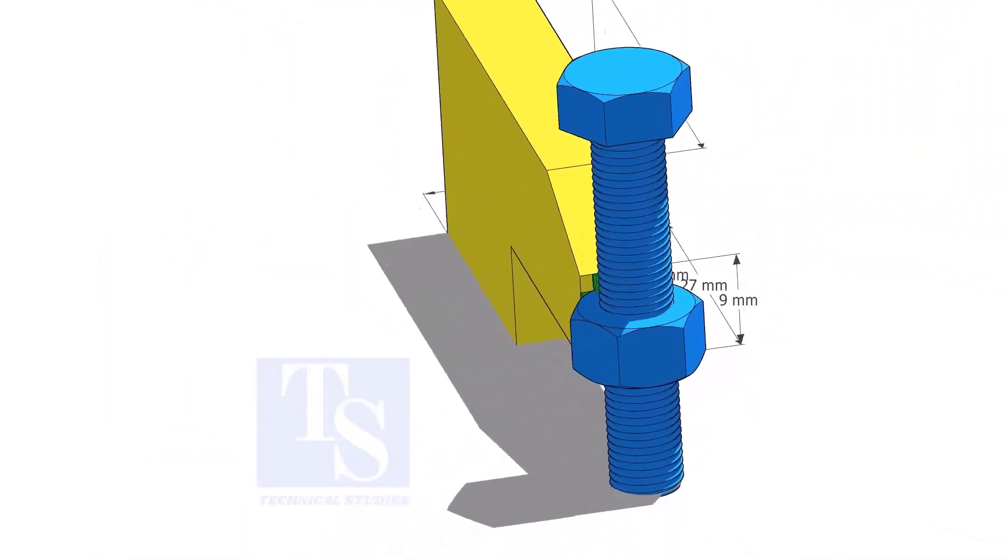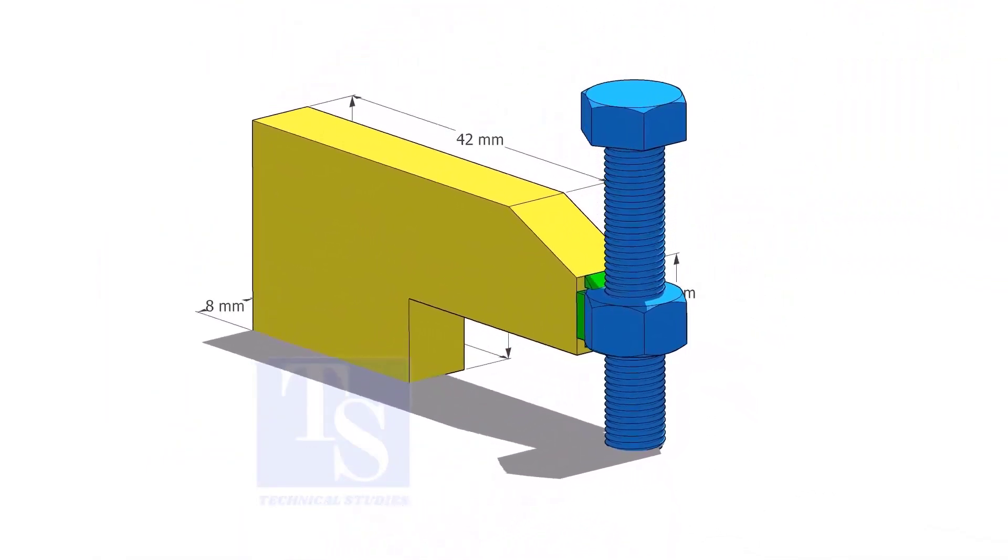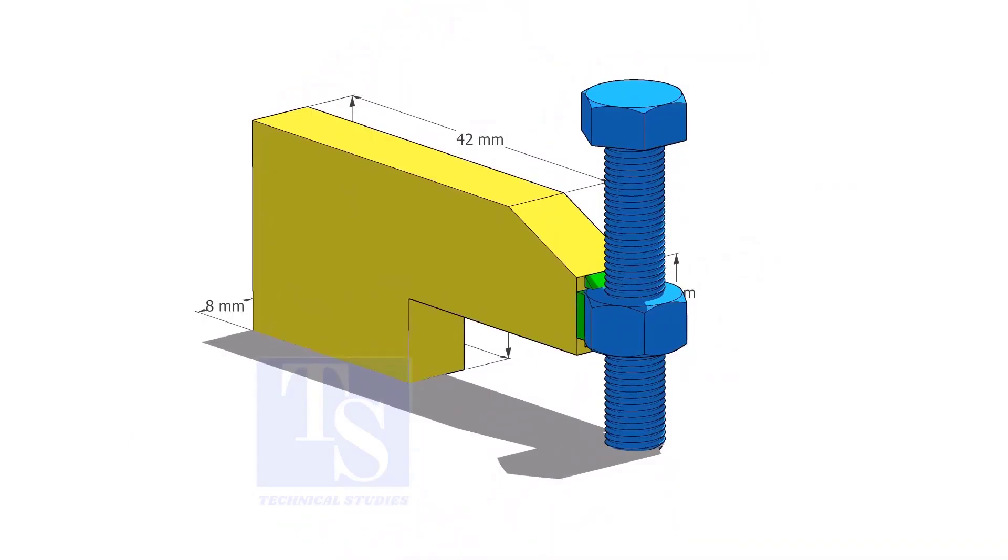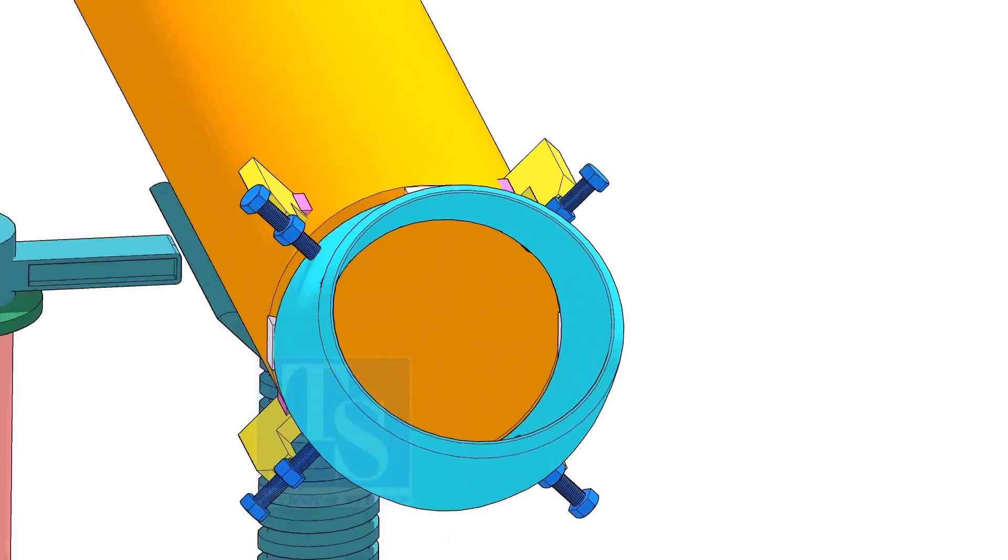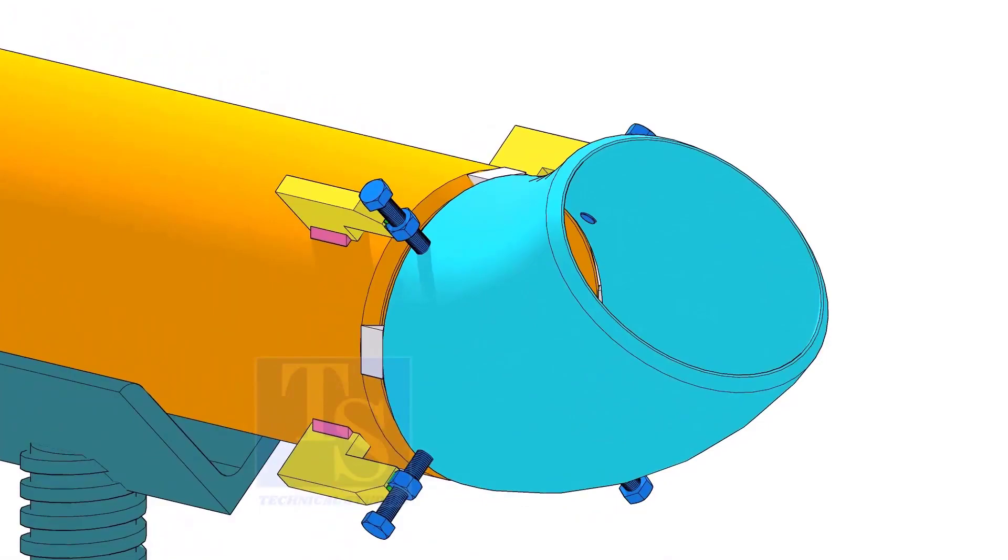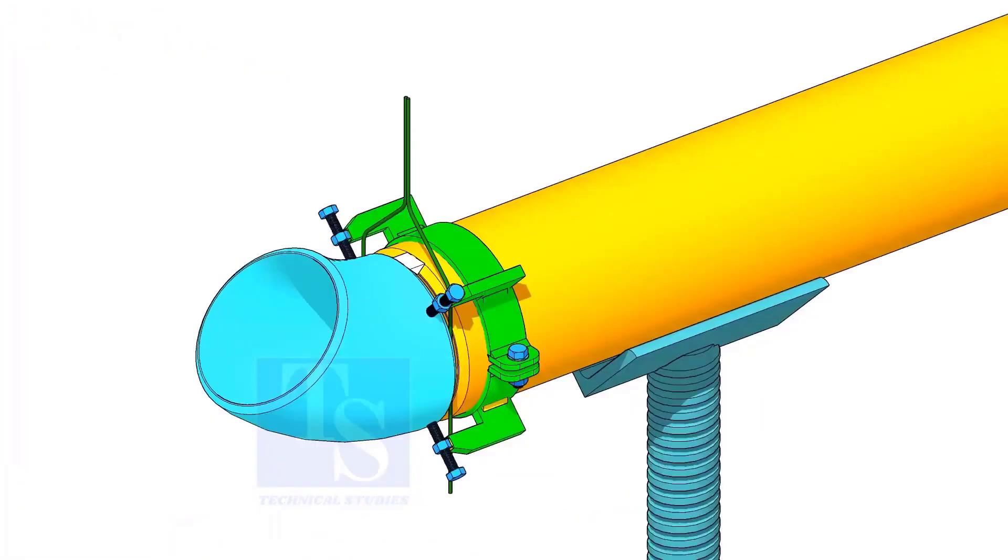Tack weld the nut to the L clamp as shown. You can either tack weld the jack bolt directly on the pipe or you can make a simple clamp like this.